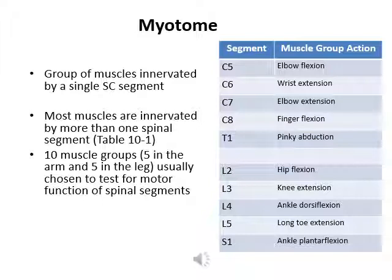The second concept is the myotome: a group of muscles innervated by a single spinal cord segment. We're talking about motor nerves. Most muscles are actually innervated by more than one spinal segment. There are two muscle groups — five in the arm, five in the leg — which we use to test motor function of the spinal segment. For example, elbow flexion is innervated by C5 and hip flexion by L2.